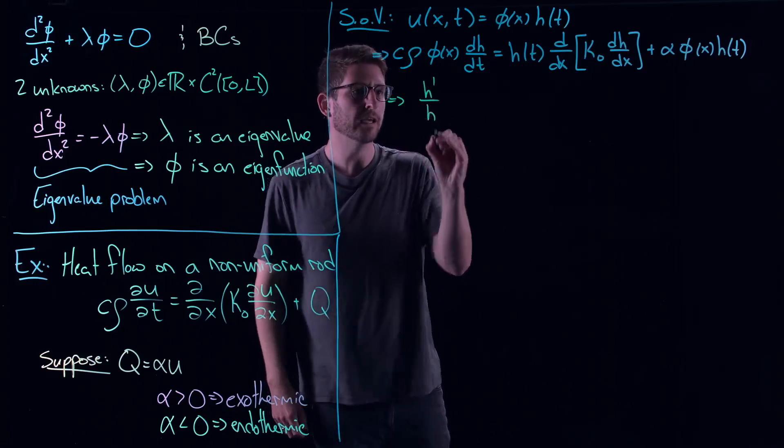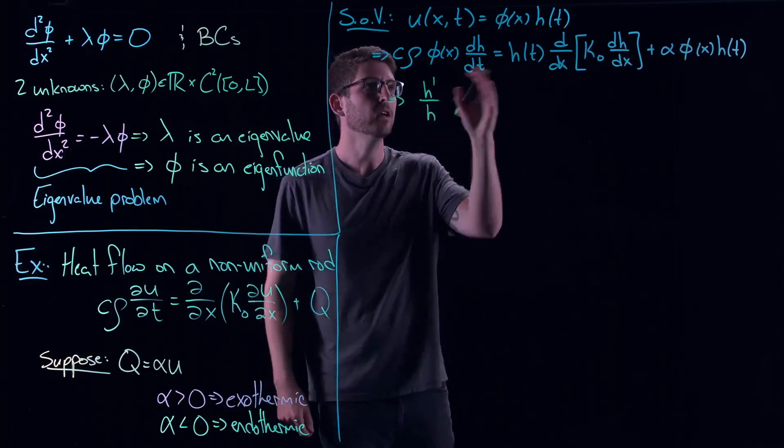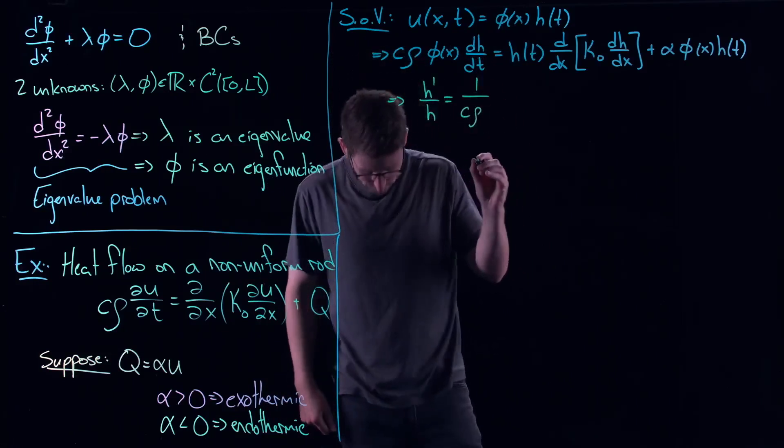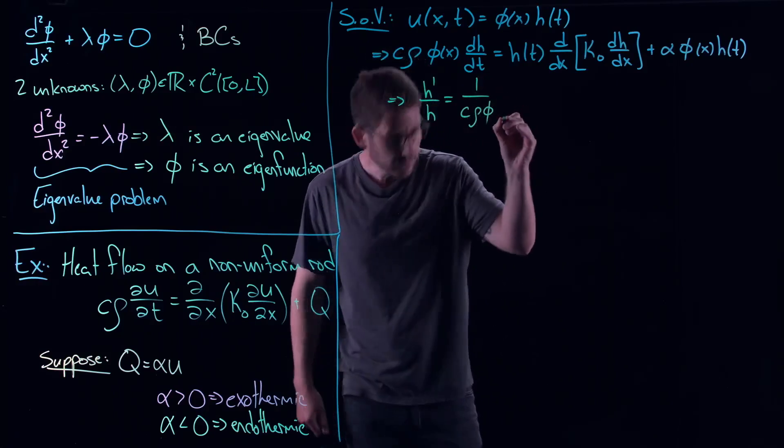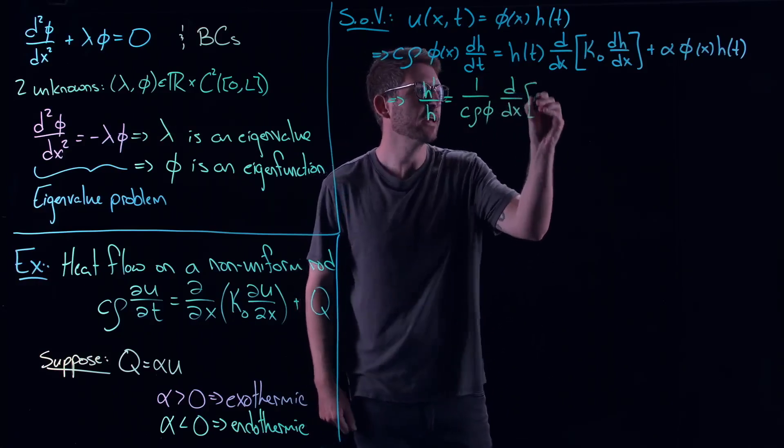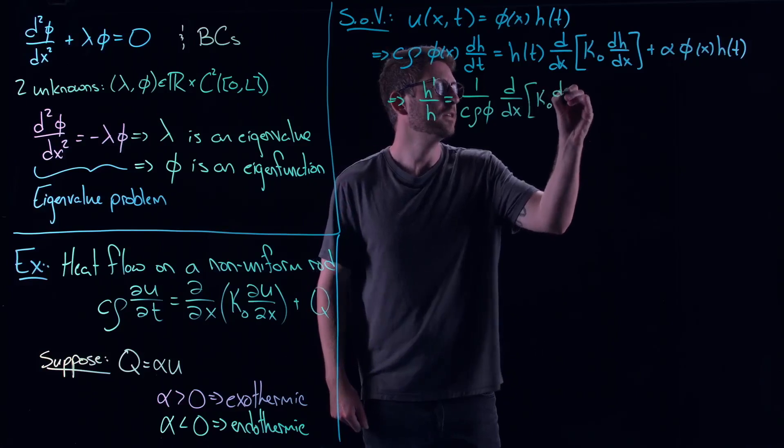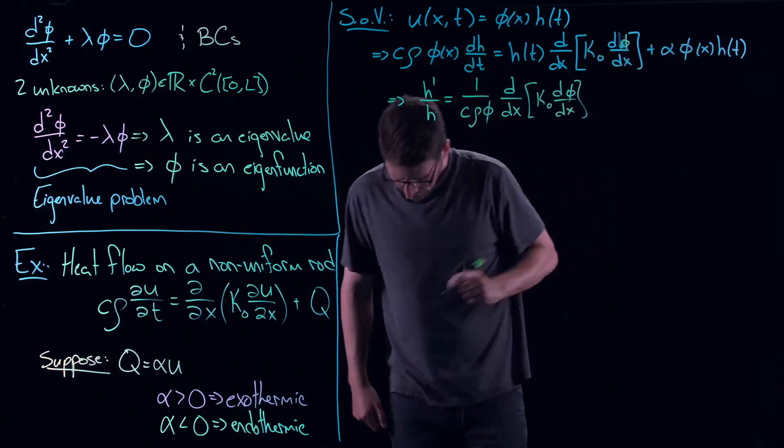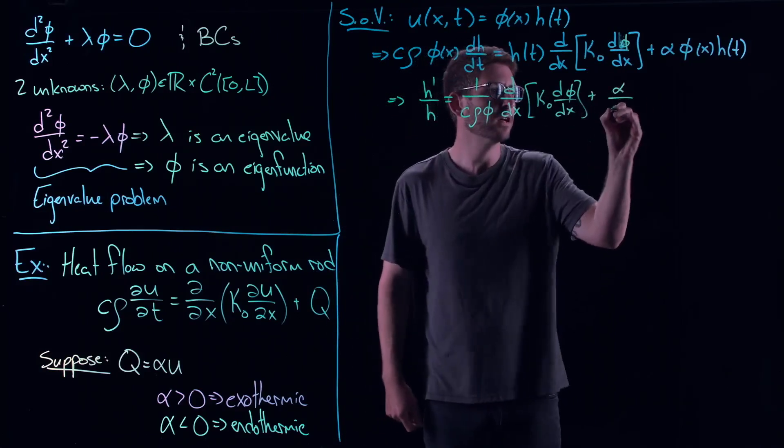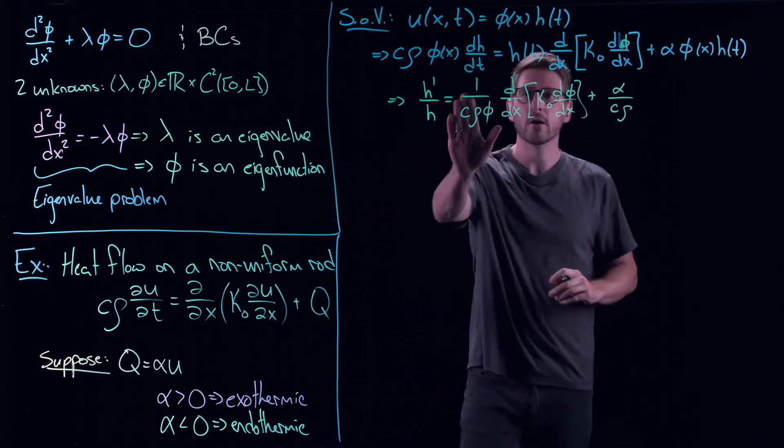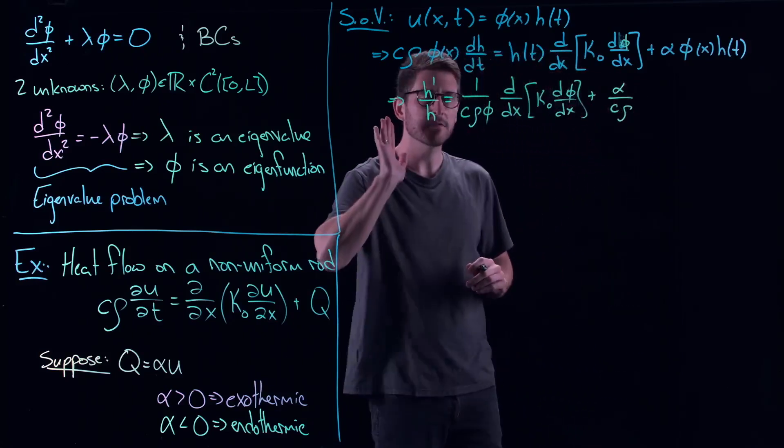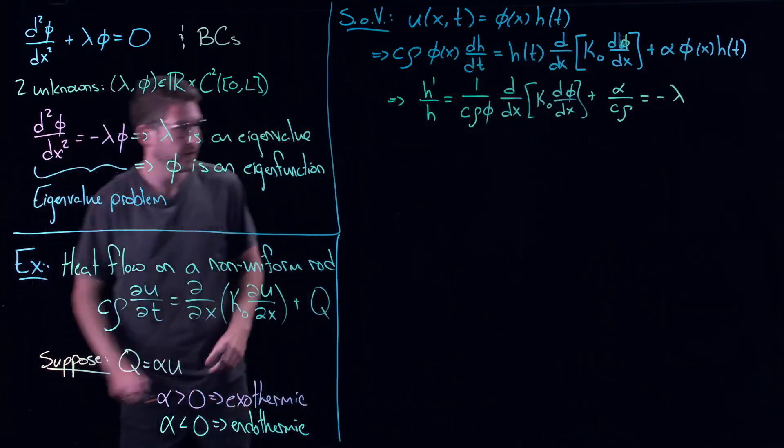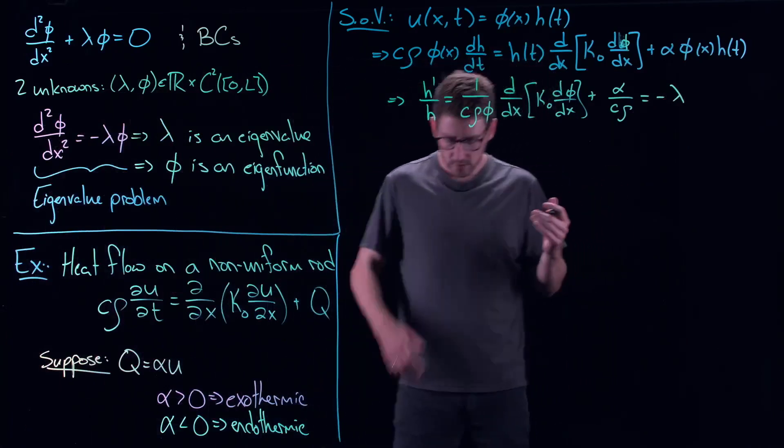When you separate this out, you would get H'/H equal to 1/(C·ρ·φ) times d/dx(k₀·dφ/dx) plus α/(C·ρ). I'm just using prime for derivatives here. Now, everything here is a function of X, everything here is a function of just T. So we do our standard separation of variables. We set this equal to minus lambda. I'm not saying we can solve it, but I just want you to know where these things come up.